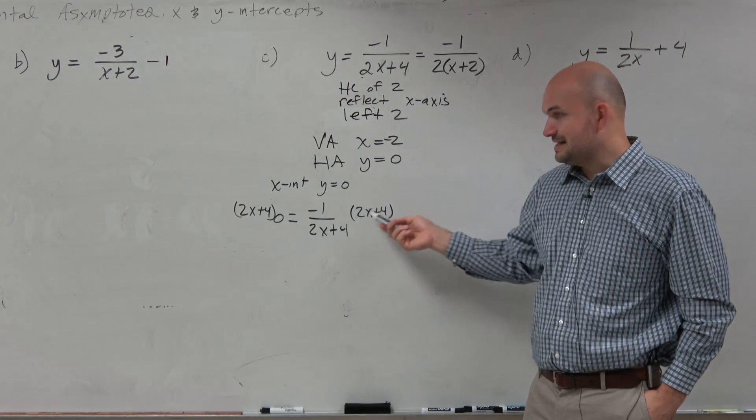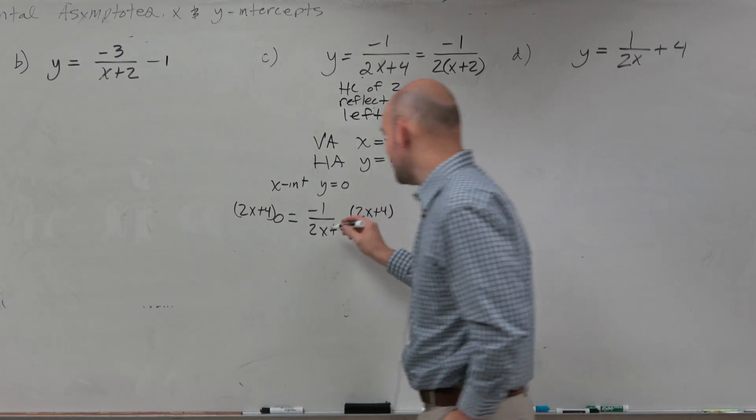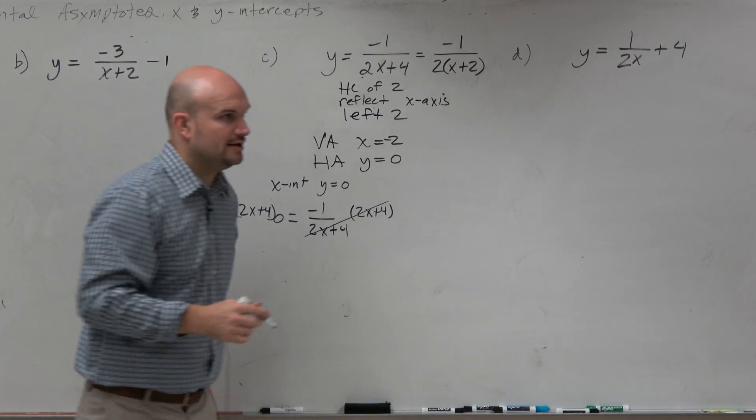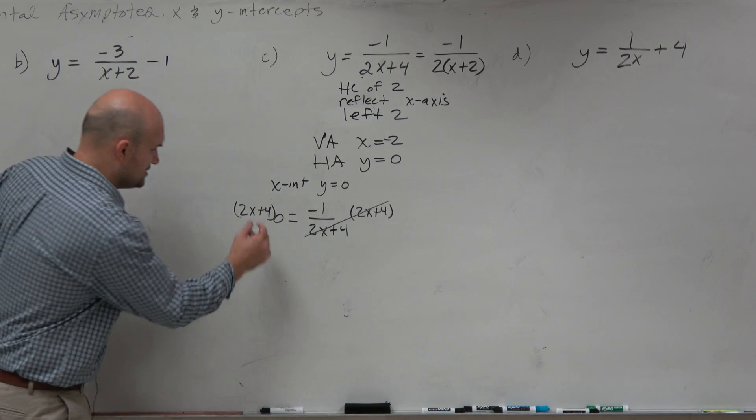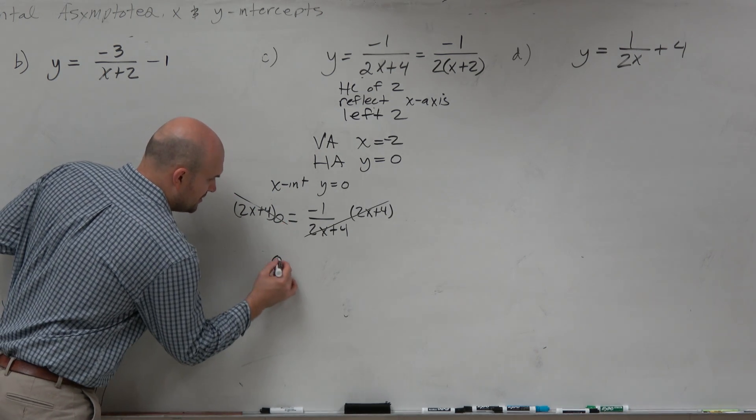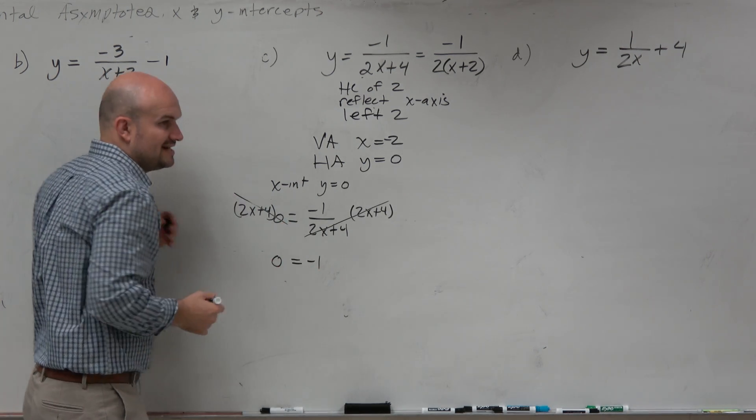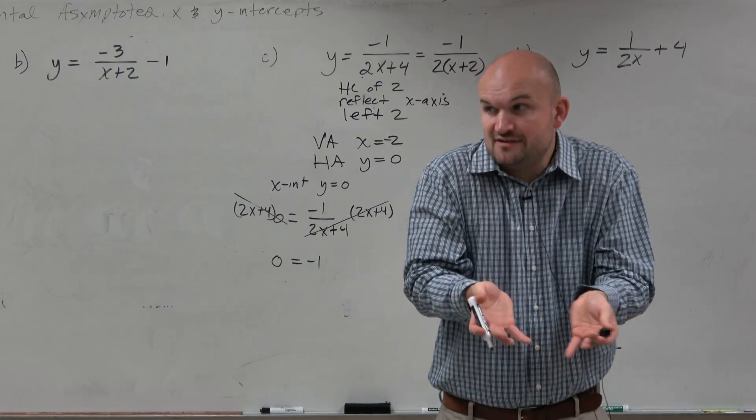Whenever you multiply by the denominator in the numerator, those obviously divide to 1. Over here, anything multiplied by 0 is just 0. So I'm left with 0 equals negative 1, which is obviously a false statement, right?